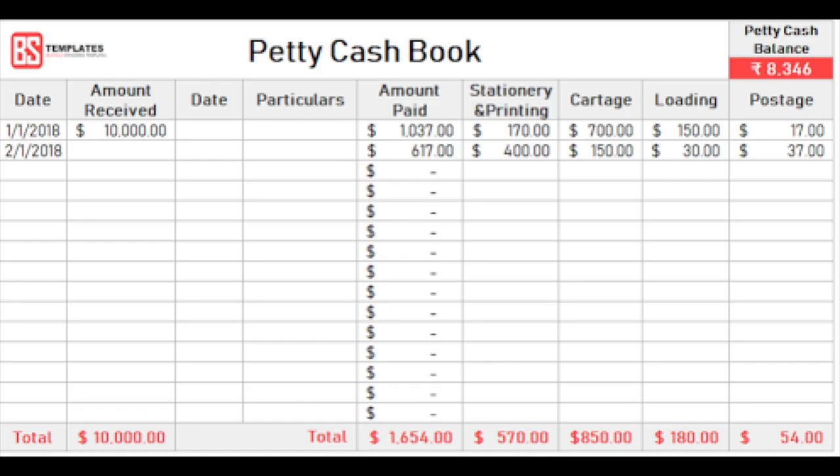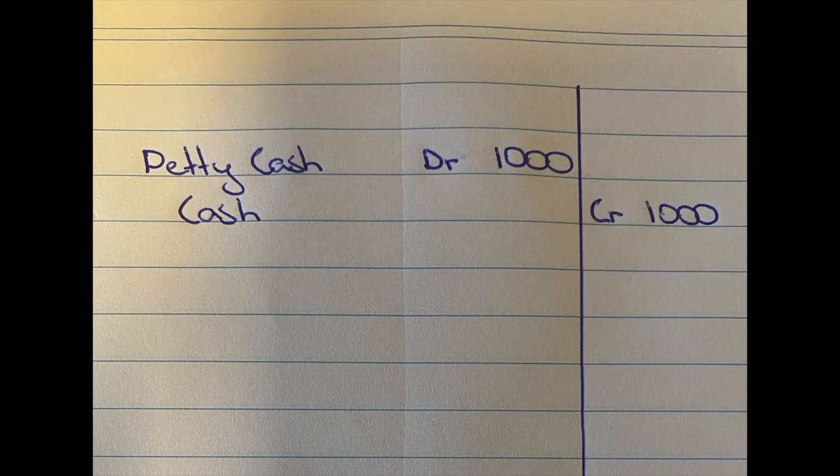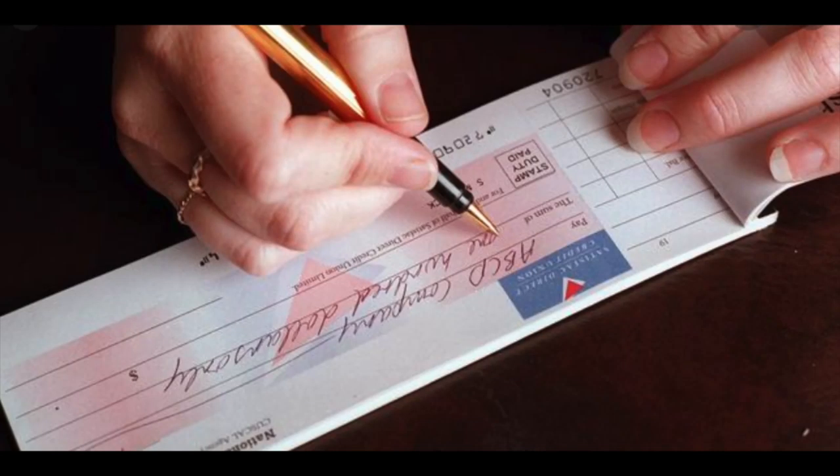First, a business will put a set amount of cash into a Petty Cash fund from the main cash account. To do this, the business must debit Petty Cash and credit cash in the journal entry.